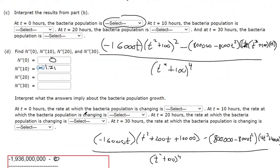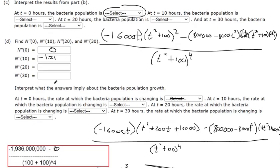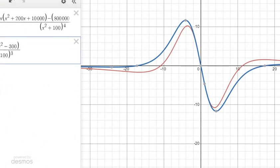So at t equals 0, the rate at which the bacteria population is changing is constant or something similar to that, because it was a 0. At 10 hours, the rate at which the bacteria population is changing is negative. So that means it's decreasing, it's going down. So the rate of change is going down is what that says. Then you'd want to plug in 20, plug in 30.